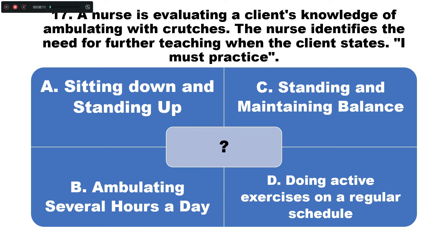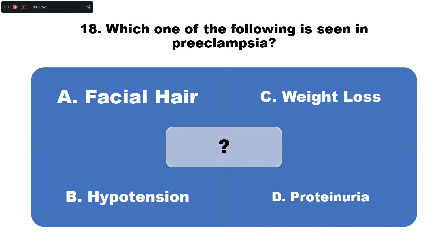Question number seventeen: A nurse is evaluating a client's knowledge of ambulating with crutches. The nurse identifies the need for further teaching when the client states they must practice — option A: sitting down and standing up, B: ambulating several hours a day, C: standing and maintaining balance, D: doing active exercise on a regular schedule. The correct answer is option B — ambulating several hours a day indicates the need for further education.